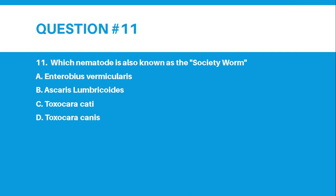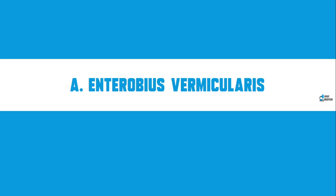Number 11. Which nematode is also known as the society worm? A, Enterobius vermicularis; B, Ascaris lumbricoides; C, Toxocara cati; or D, Toxocara canis. The correct answer for number 11 is letter A, Enterobius vermicularis.